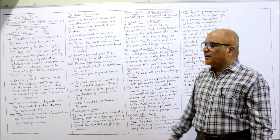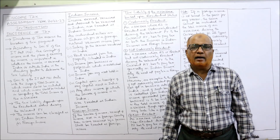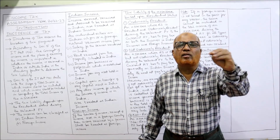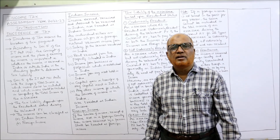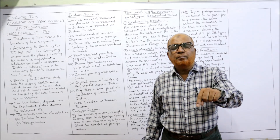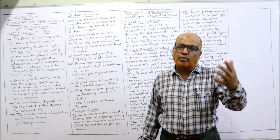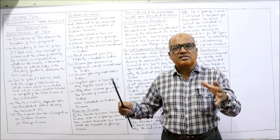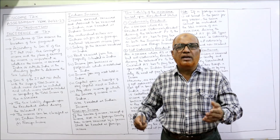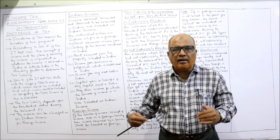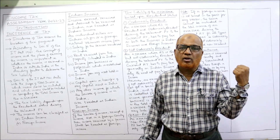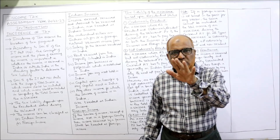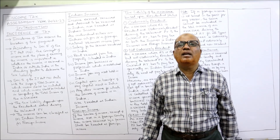Secondly, rent received on property situated in India. If a property is situated in India and it is given on rent, the rent received is Indian income — whether received by an Indian national or a foreigner. For example, if a foreigner purchases property in India, lets it out and earns rent, even he has to pay tax because the property is situated in India.